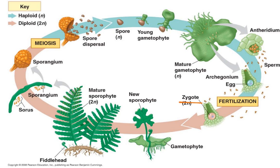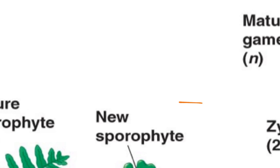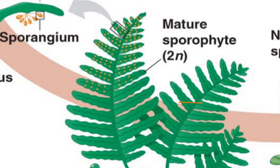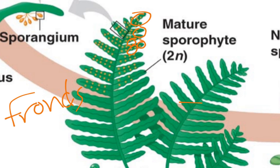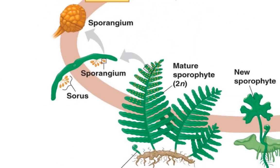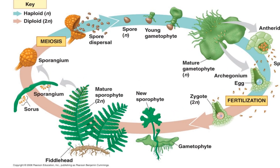The sporophyte is going to be the dominant part of the life cycle. Now, underneath the leaves — underneath the fronds, we don't call them leaves, we call them fronds — the ferns have these teeny tiny little brown things underneath them. They usually look brown when you're looking at the actual underside of a real fern. But they are what we call sporangia, or sporangium. This right here is actually the frond, and underneath those are the sporangium. A group of sporangium is what we call a sorus, or the plural of that would be sori. The sorus is made up of several sporangium.